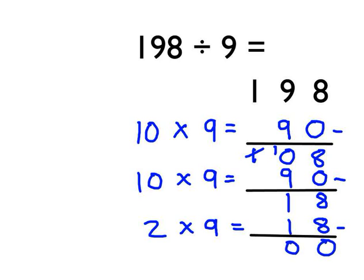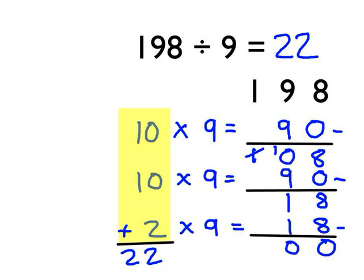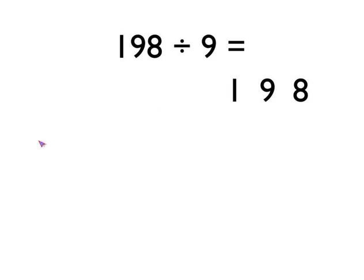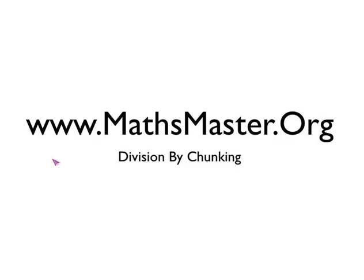We've got to the end of our question. We look at this column and add it up: 10 nines here, 10 nines below it — that takes us to 20 — and then another 2 nines. We got 22 nines altogether, so our answer is 22. 9 went into 198 twenty-two times, or 22 times 9 is 198. That was division using the chunking method — hope you enjoyed that. If you want to see more maths videos, please visit MathsMaster.org.